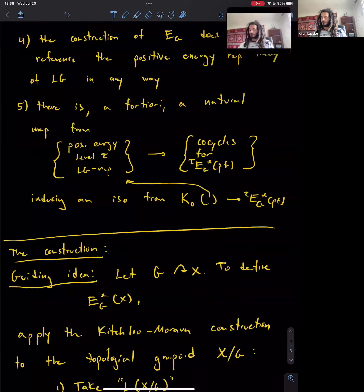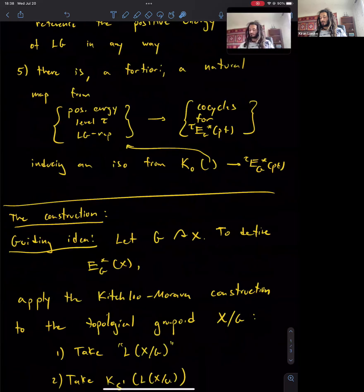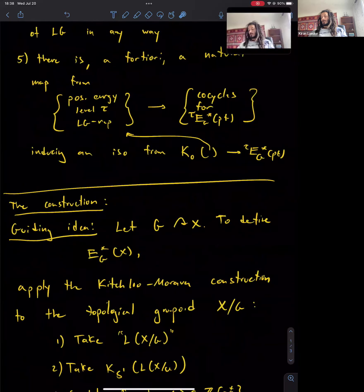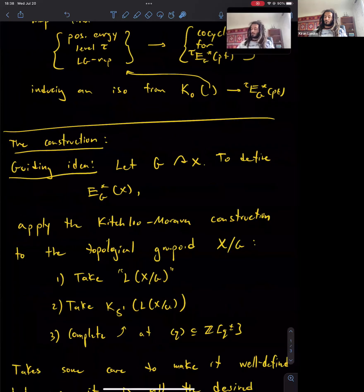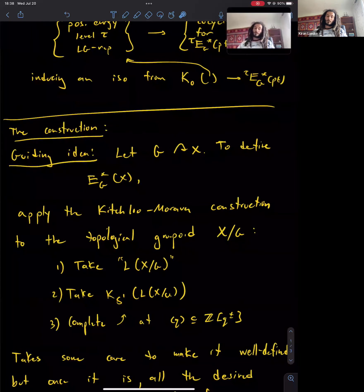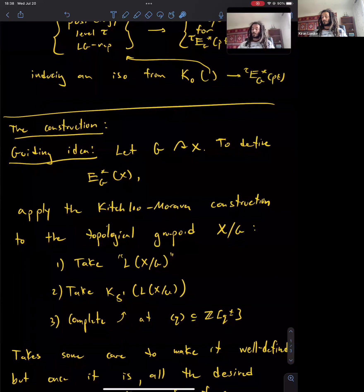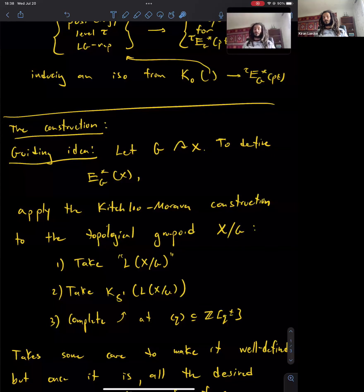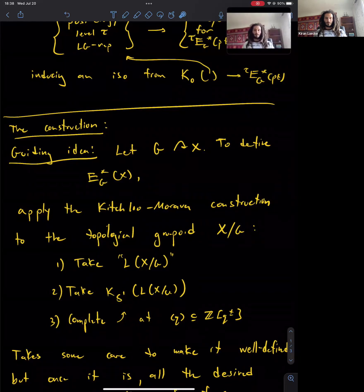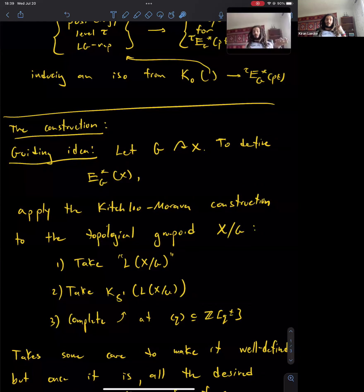Let me get into the construction. The guiding idea is to mimic the Kischlu-Morava construction as closely as we can. We want to do it equivariantly, so we start with a space X with a G-action by some compact Lie group. To apply the Kischlu-Morava construction, we'd apply it to the quotient groupoid. That construction replaced the space by its free loop space, and then we take S1-equivariant K-theory, and then complete in positive Q powers—tensoring from Laurent polynomials to Laurent series.